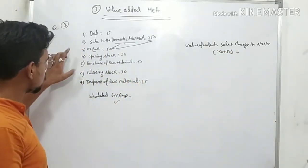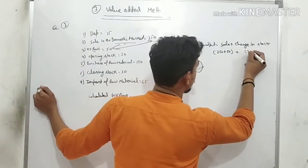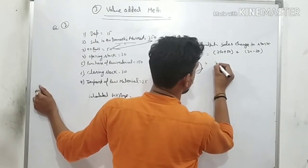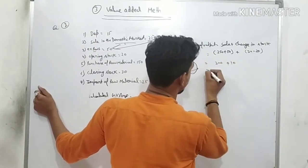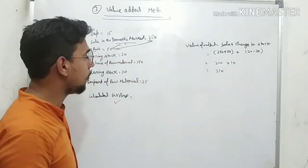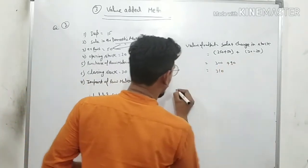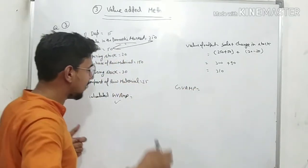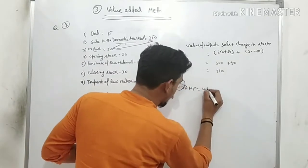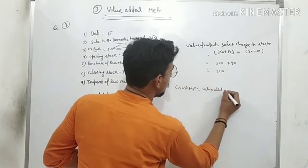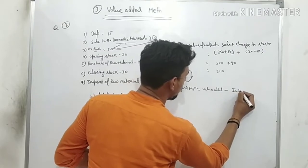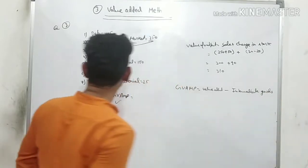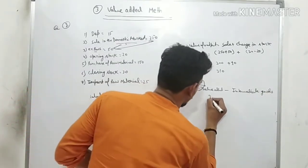Change in stock = closing minus opening = 30 − 20 = 10. So Value of Output = 200 + 50 + 10 = 310. Now find GVAMP. Formula: Value of Output minus Intermediate Goods.